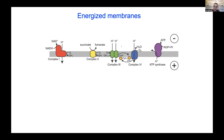Another enzyme that produces an energized membrane is the vacuolar-type ATPase, and this is a huge direction in my laboratory. There is a lot of interplay between what we learn about V-ATPases and what we learn about the other intrinsic membrane protein complexes of the electron transport chain.